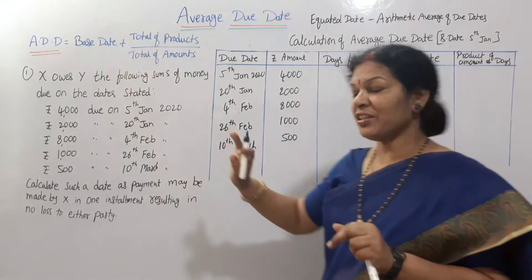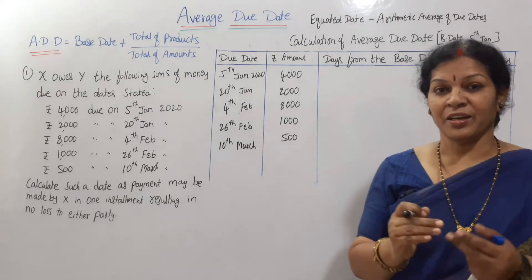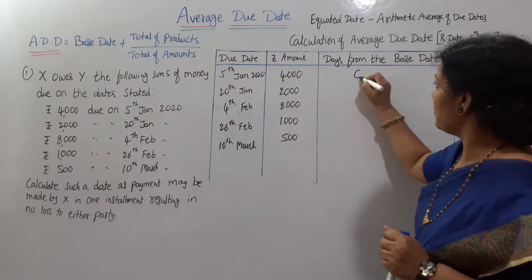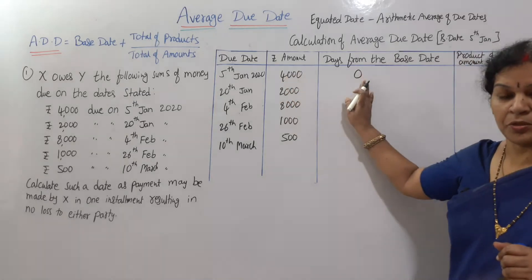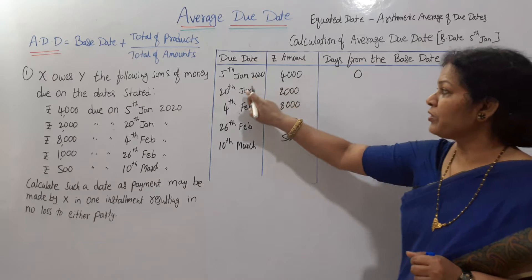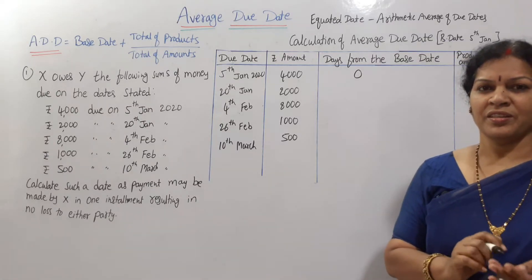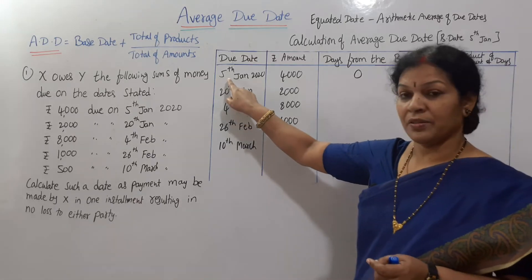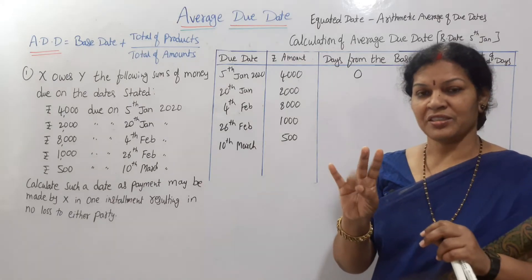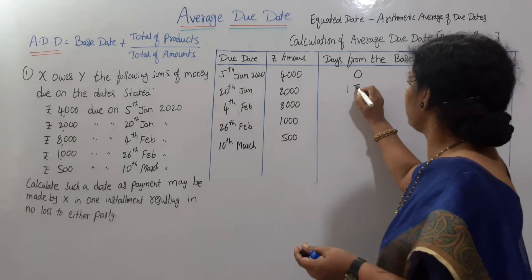For the days column, we need a base date. The base date is always the starting day — the earliest date in the problem, which is 5th January. So 5th January is the base date and we mark it as 0. From here onwards we calculate the days. For 20th January: starting from 5th January, we don't count the 5th itself, so from 6th onwards to 20th January — that gives us 15 days.